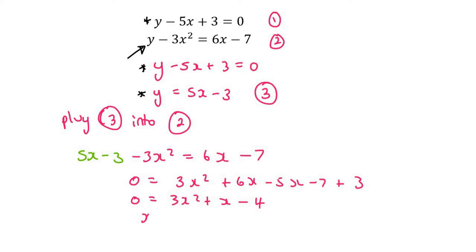Oh, nice answers. x equals 1, or x equals negative 4 over 3. Now we know that negative 4 over 3 in decimals is actually negative 1.33.